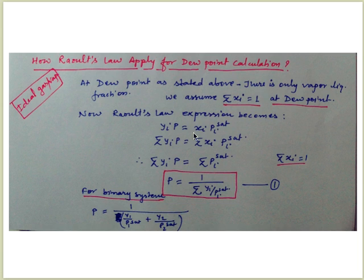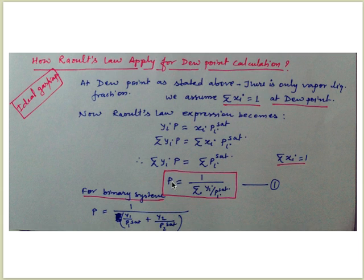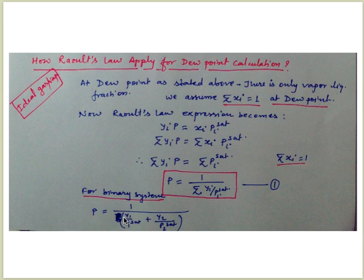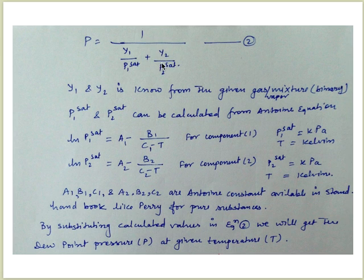Raoult's law states: yi × P = xi × Pi_sat. If we apply summation on both sides for all components, and use Sigma xi = 1, the relationship becomes: P = 1 / (Sigma yi / Pi_sat), where P is the dew point pressure. For a binary system with components 1 and 2, this equation reduces to the binary form, which is the final equation we use for dew point pressure calculation.